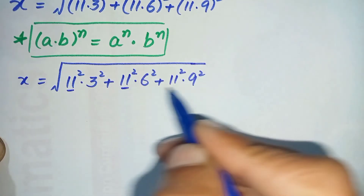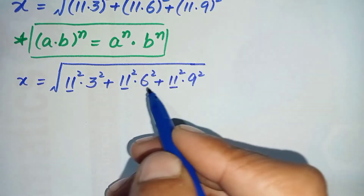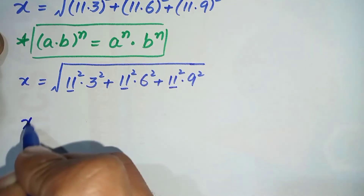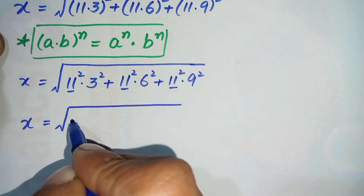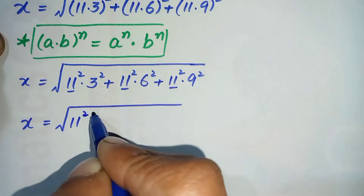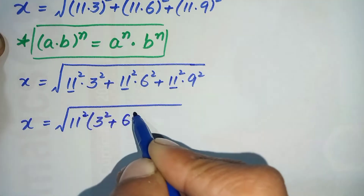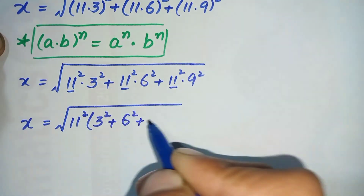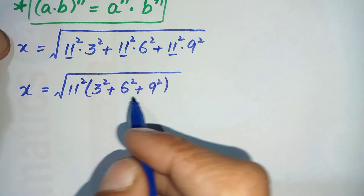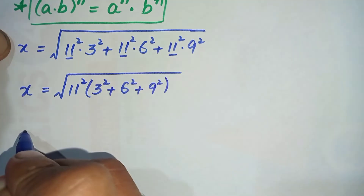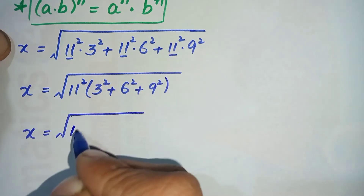Looking at all the terms, 11 raised to power 2 is common in all of them, so let us take 11 squared as a common factor. This equation will become x is equal to the square root of 11 squared times the quantity 3 squared plus 6 squared plus 9 squared.